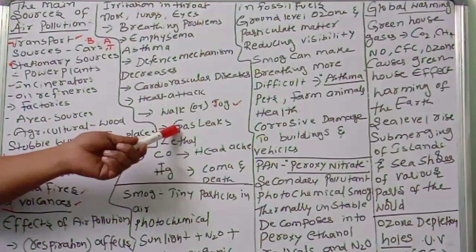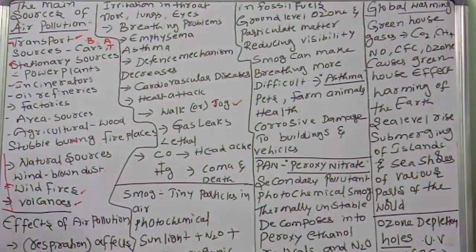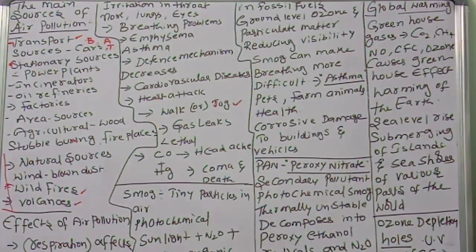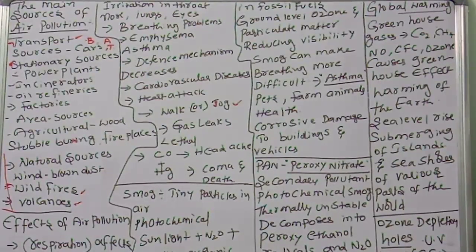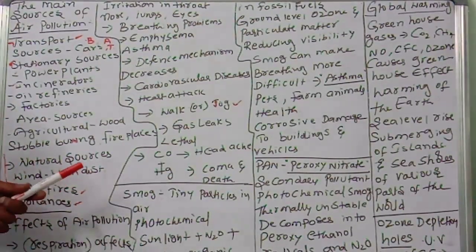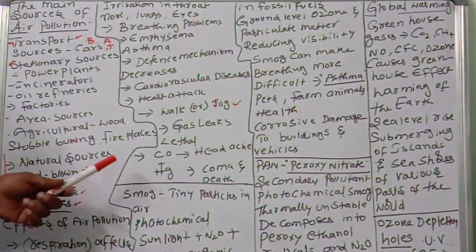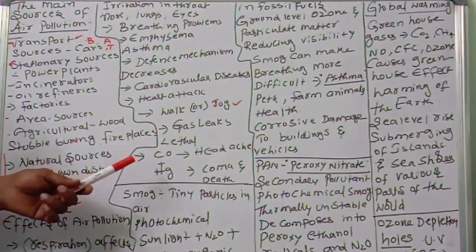A very dangerous example is what happened in Bhopal — methyl isocyanate gas leaked and so many people died. Till today, people in Bhopal are still facing problems because of methyl isocyanate. Gas leaks can be lethal and affect the quality of air in the affected area.